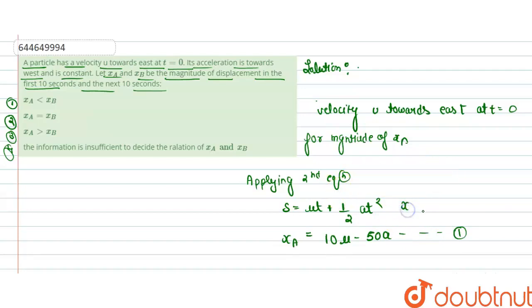Equation 1 is given because we put the values. So s equals x_a, that equals u into 10 because time is 10, the first 10 seconds, and that minus one-half a into 10 squared. So after we get the value, we get equation 1.